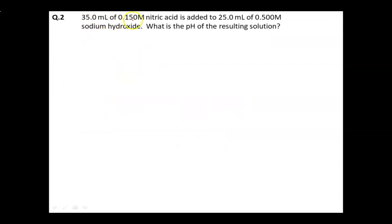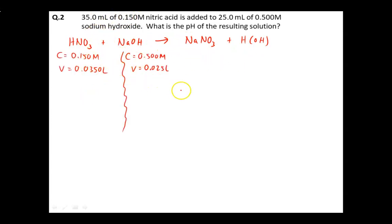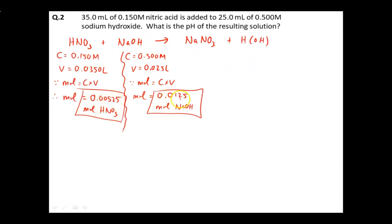Let's try this last question: 35 mL of 0.150 M nitric acid is added to 25 mL of 0.500 M sodium hydroxide — what is the pH of the resulting solution? This is not a complete titration because we haven't reached the equivalence point; one of the reagents will be left over. Whoever is in excess will determine the pH — if there's excess nitric acid, pH will be below 7; if there's excess sodium hydroxide, pH will be above 7. Write out and balance the chemical equation: it's a nice 1-to-1-to-1-to-1 double displacement neutralization reaction. Converting to moles gives 0.00525 moles of HNO₃ and 0.0125 moles of NaOH.